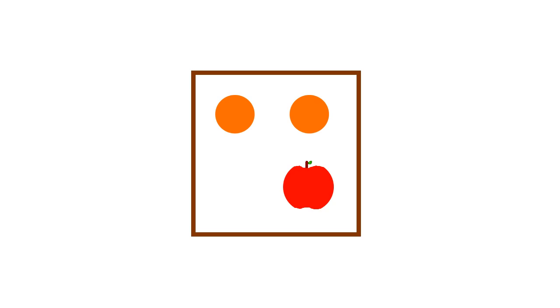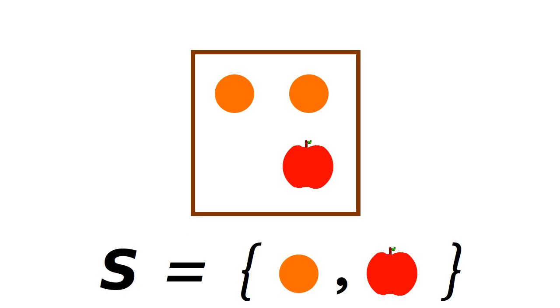It is important to note that if you had a box of two oranges and an apple, it would be considered the same as the first box. We are only concerned with what types of objects are in the box.